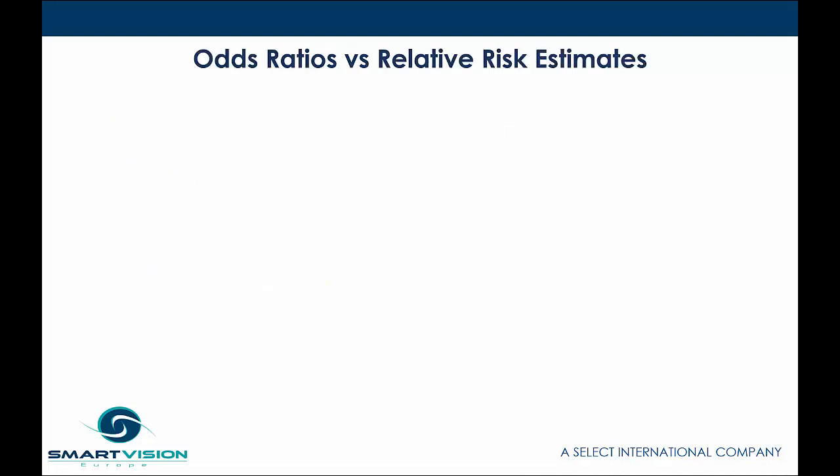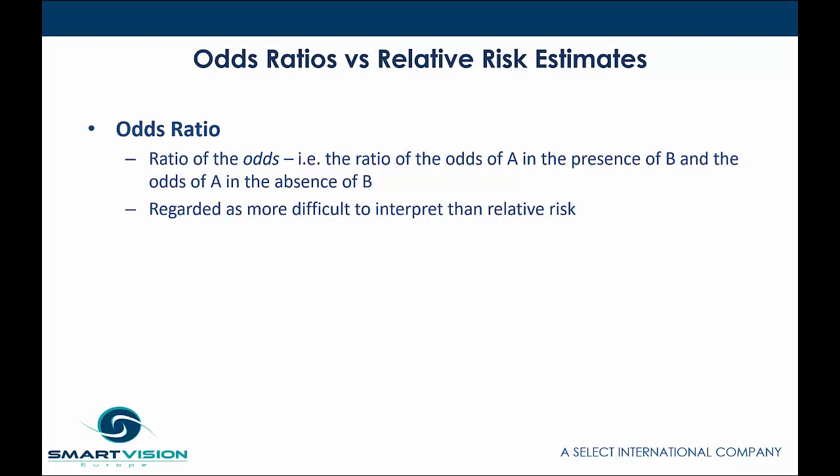When comparing odds ratios and relative risk estimates, we're looking at a ratio value based on odds and a ratio value based on probabilities. Odds ratios are simply the ratio of the odds of category A in the presence of category B versus the odds of A in the absence of category B. Because it's based on odds, it's regarded as more difficult to interpret than relative risk. But odds ratios are here to stay because they have mathematical properties which make them useful, particularly for logistic regression, where we want to see the relative impact of predictor variables upon an outcome.